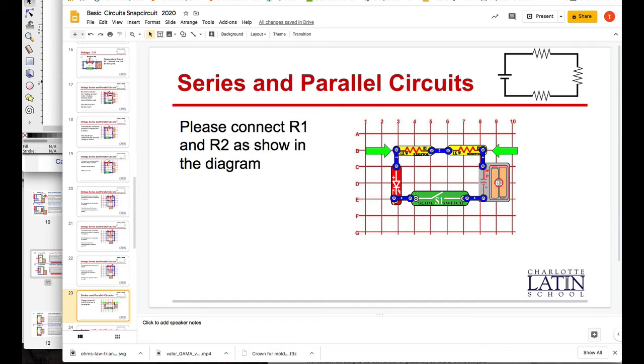So Christmas trees, for example, are almost always in these days parallel. It used to be cheaper to do them in series, but if you lost one light bulb, the whole system stopped. So you had to switch out all the light bulbs.